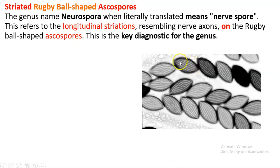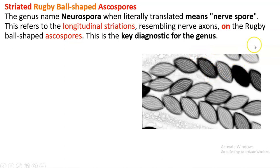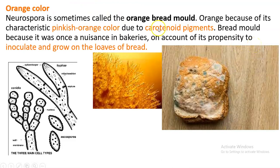As in our hand we have nerves, similarly, nerve-like striations are seen on the surface of ascospores. It is also having the shape of a rugby ball — rugby ball shape, that also you have to mention. Then, it is pinkish-orange in color due to carotenoid pigments, and it infects bread with this orange color.